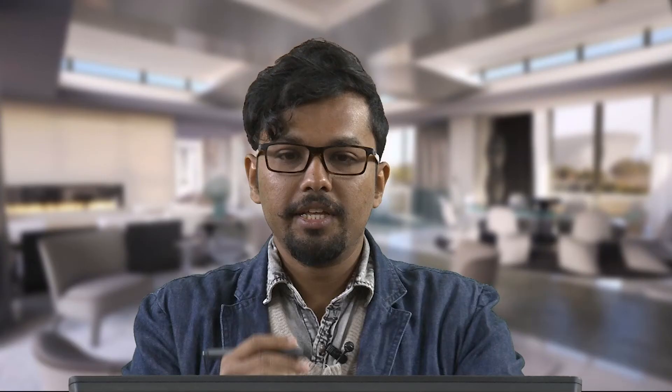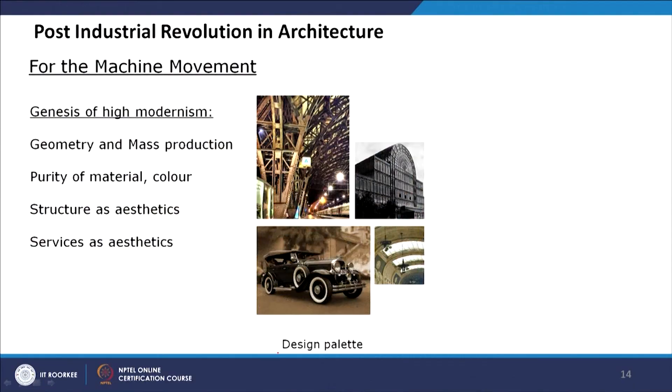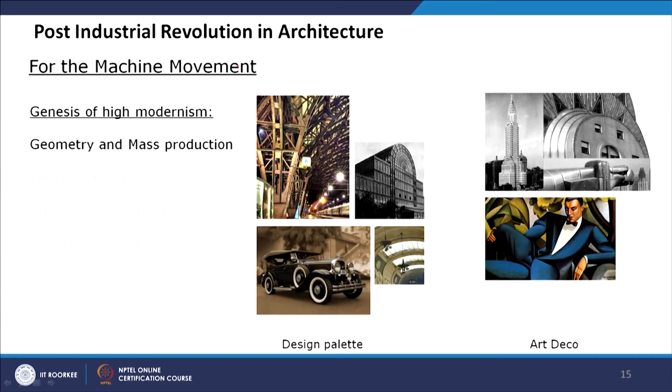Services as aesthetics: the services were exposed and became the aesthetic elements. Looking at the design palette of the for-the-machine movement and how these designs were later translated into subsequent architectural styles — in Art Deco, for example, this is the Crystal Palace from pure construction, and this is the Art Deco Chrysler Building.